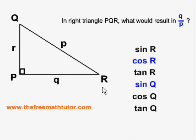If we do cos of R, that is equal to adjacent over hypotenuse, and that would give us Q over P. But if we do sine of Q, that is equal to opposite over hypotenuse, and that would also give us Q over P.